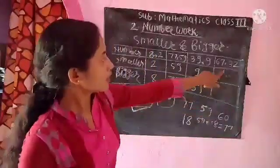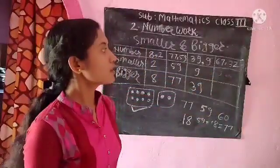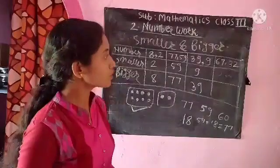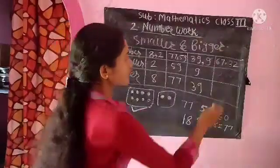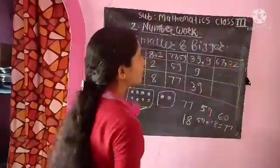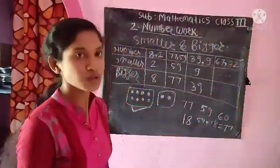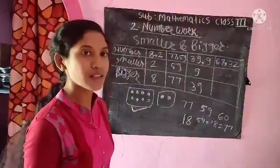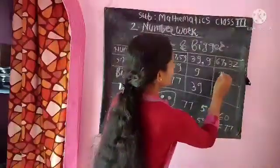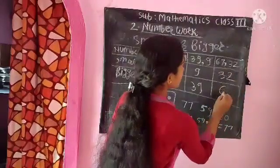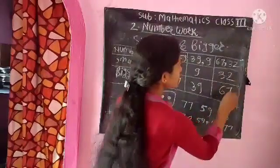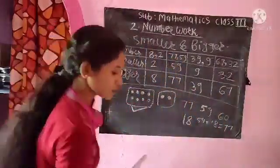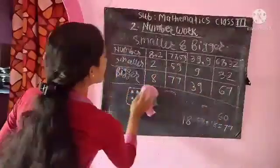Then next, in the next table there is given 67 and 32. These are the two numbers in the last table. So 32 is the smaller number compared to 67. Smaller number is 32 and bigger number is 67. Now we complete this table.